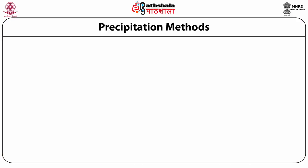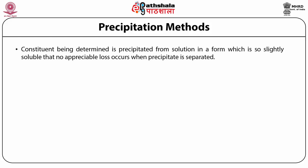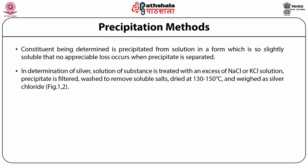The first step in gravimetric analysis is precipitation — how to precipitate the constituent from the solution. The constituent being determined is precipitated in a form so slightly soluble that no appreciable loss occurs when the precipitate is separated by filtration and weighed. In the determination of silver, a solution is treated with an excess of sodium chloride or potassium chloride solution, and the precipitate is filtered off.